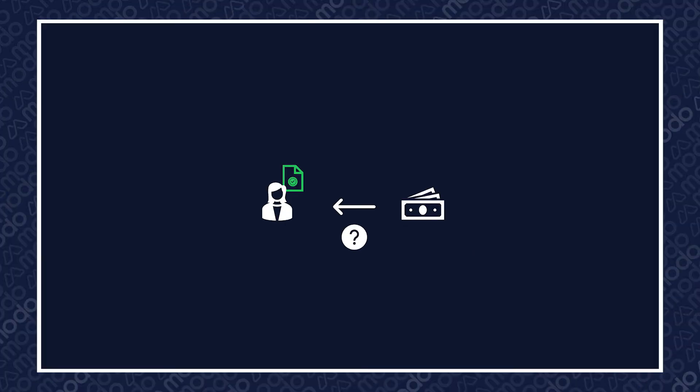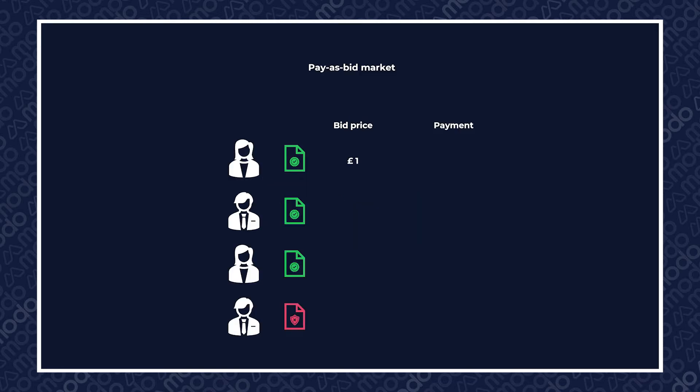Once participants have been accepted in an auction, there's the small matter of how much they'll get paid. In a pay as bid market, participants who are successful are paid their bid price. So if I bid into a market at £1 and get accepted, I'll be paid £1. This means that in a pay as bid market, different providers can be paid different amounts for the same service. The classic example of a pay as bid market is the monthly FFR tender.